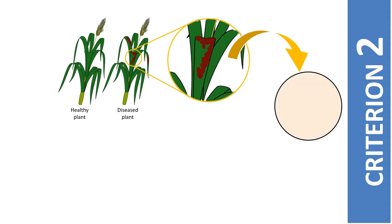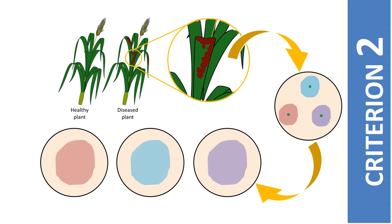In this example, the plant samples were plated on agar media and three types of microorganisms were cultured on this media, indicated as blue, purple, and red. These three isolates are the suspects that caused the disease.